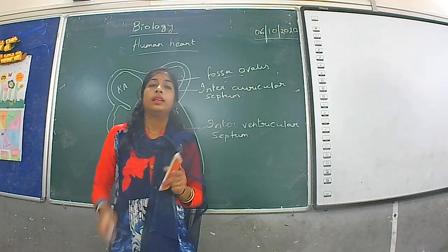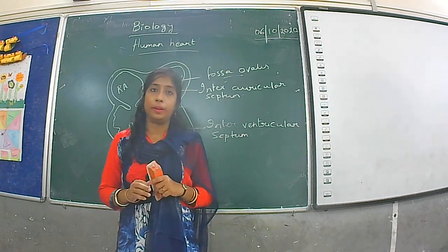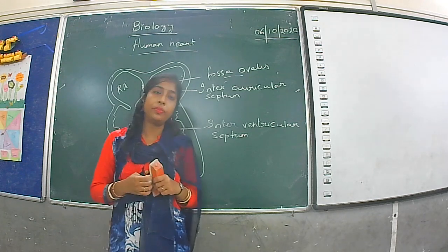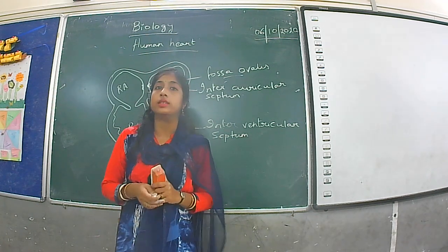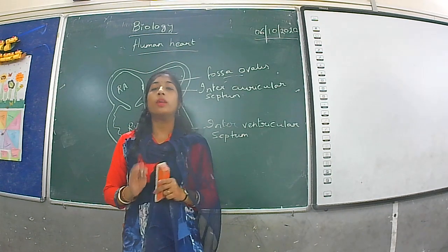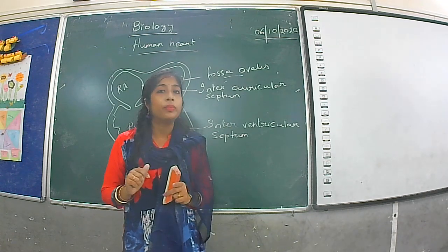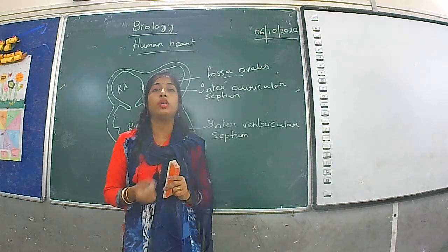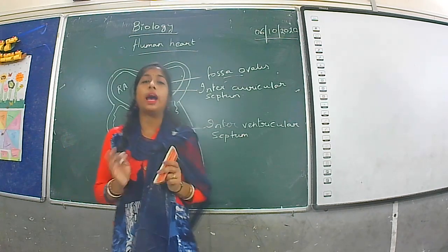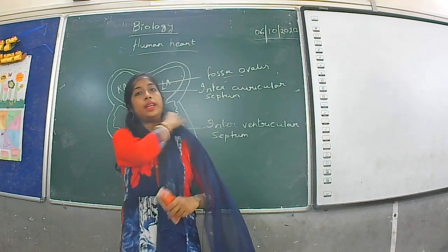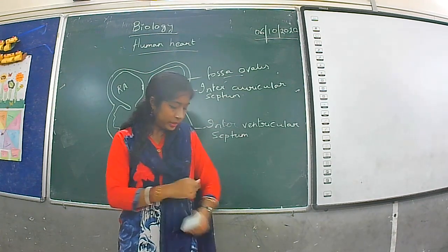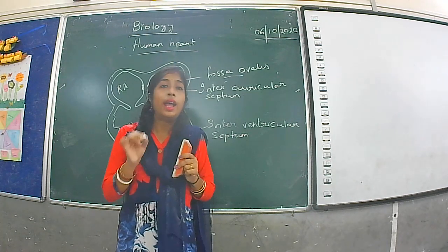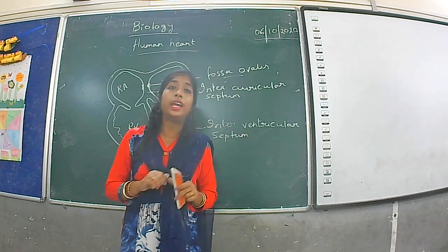The fossa ovalis is the remains of the foramen ovale. The foramen ovale is actually a hole present on the inter-auricular septum during embryonic conditions, which facilitates the mixing of blood during that stage.